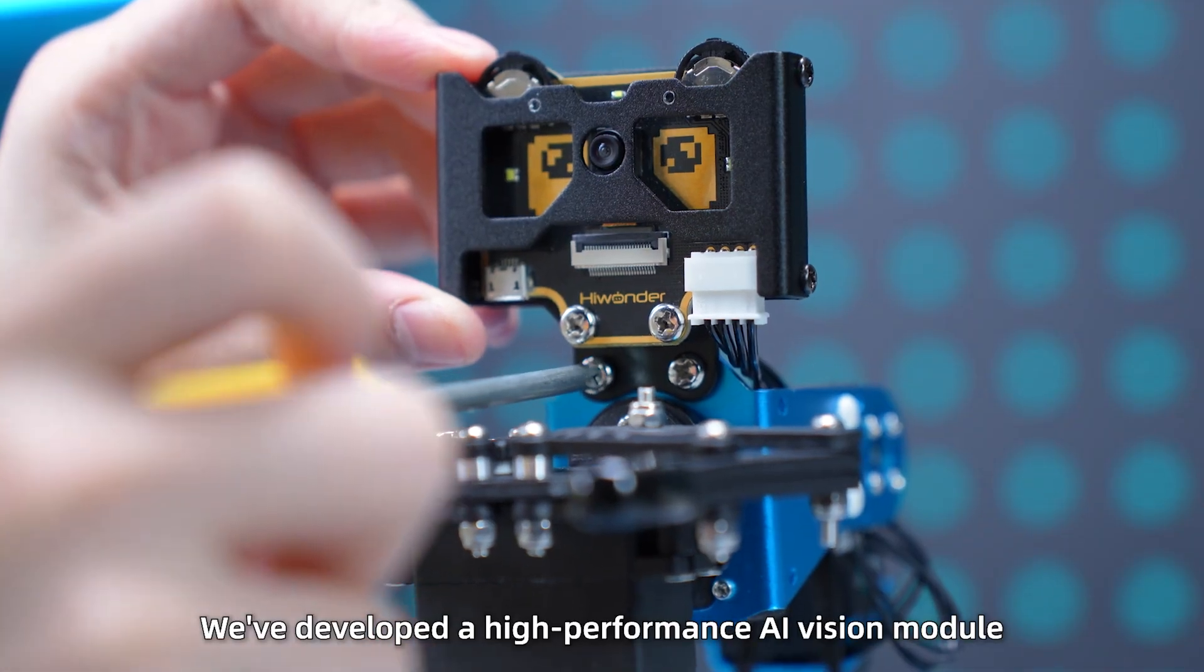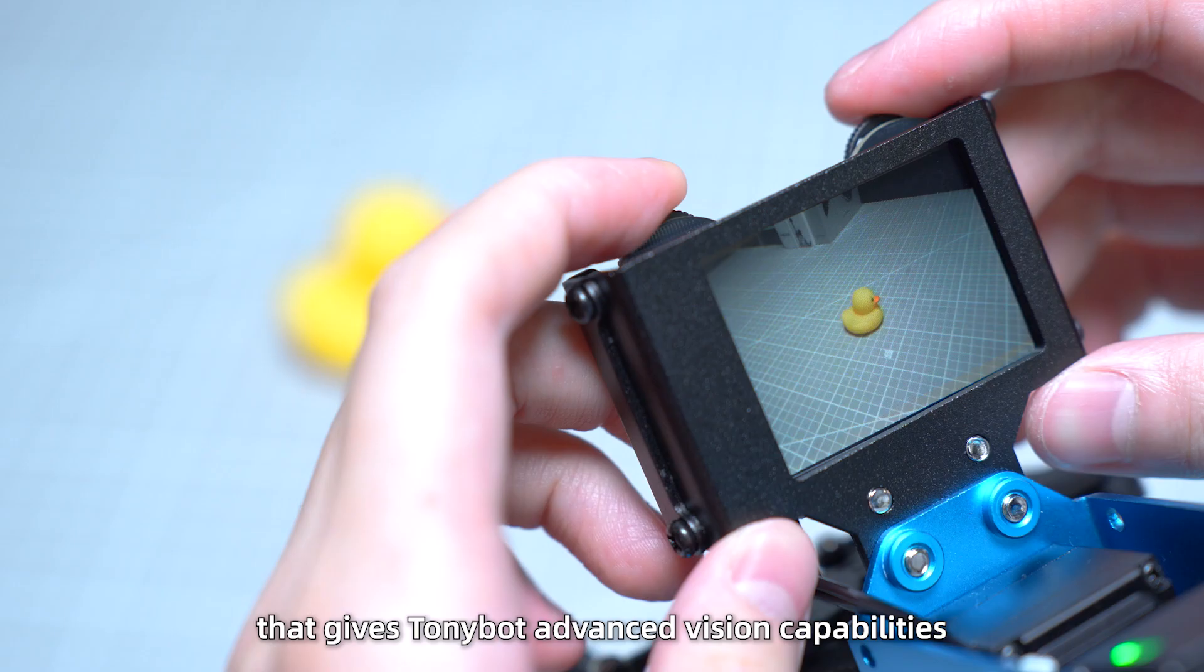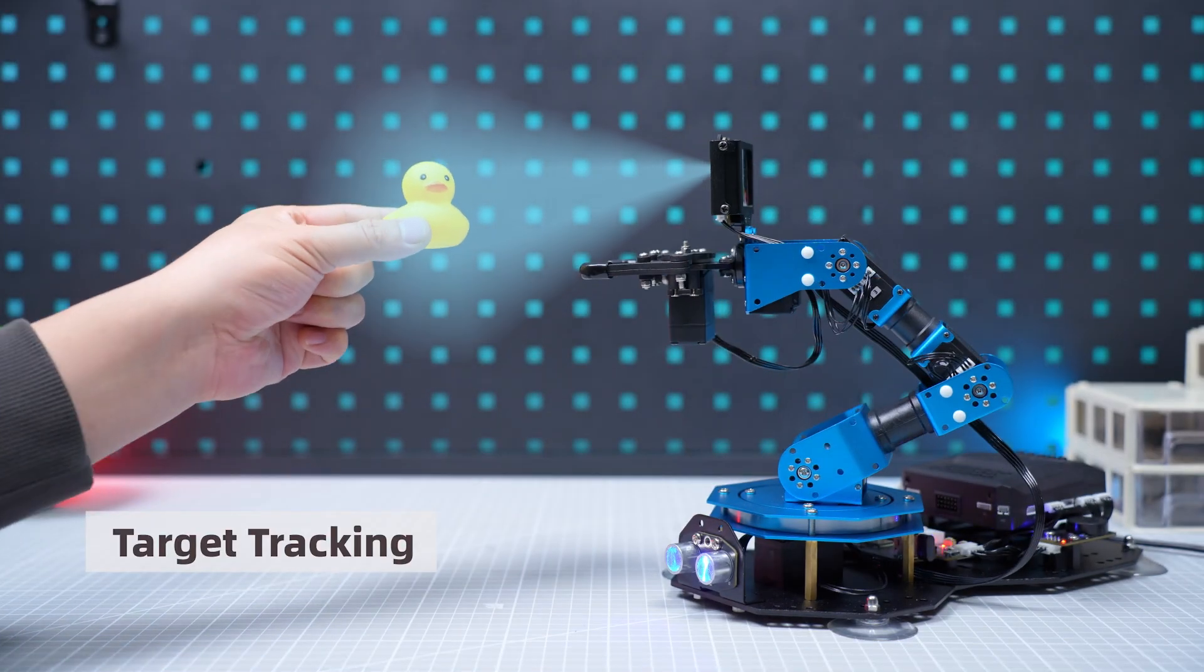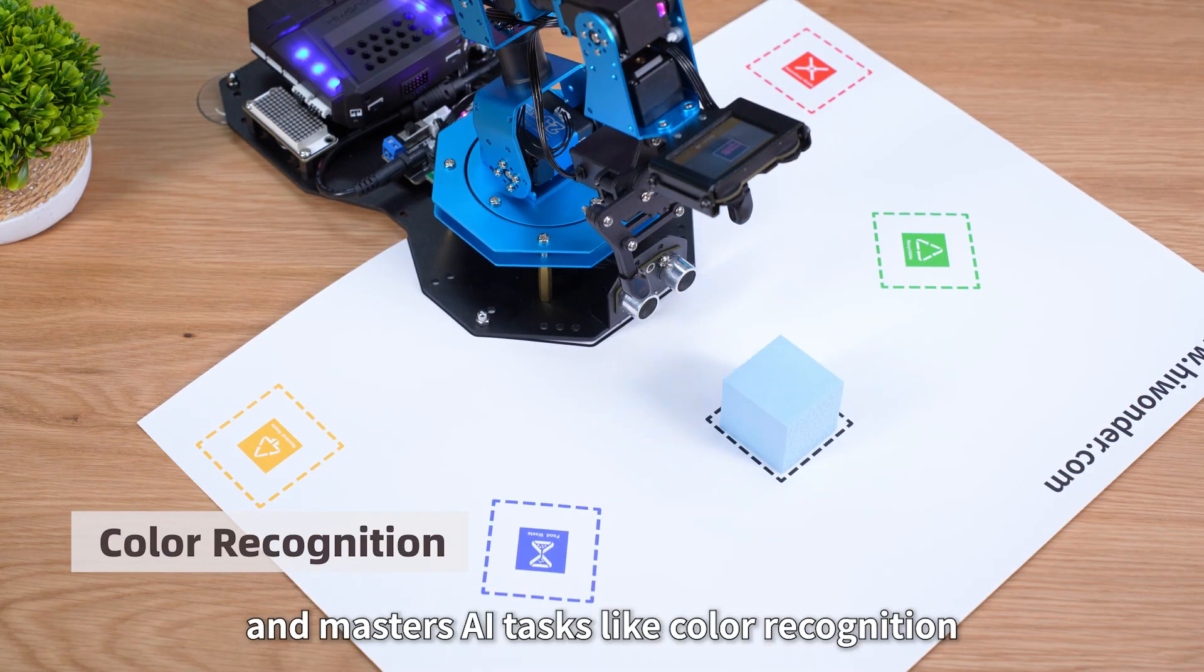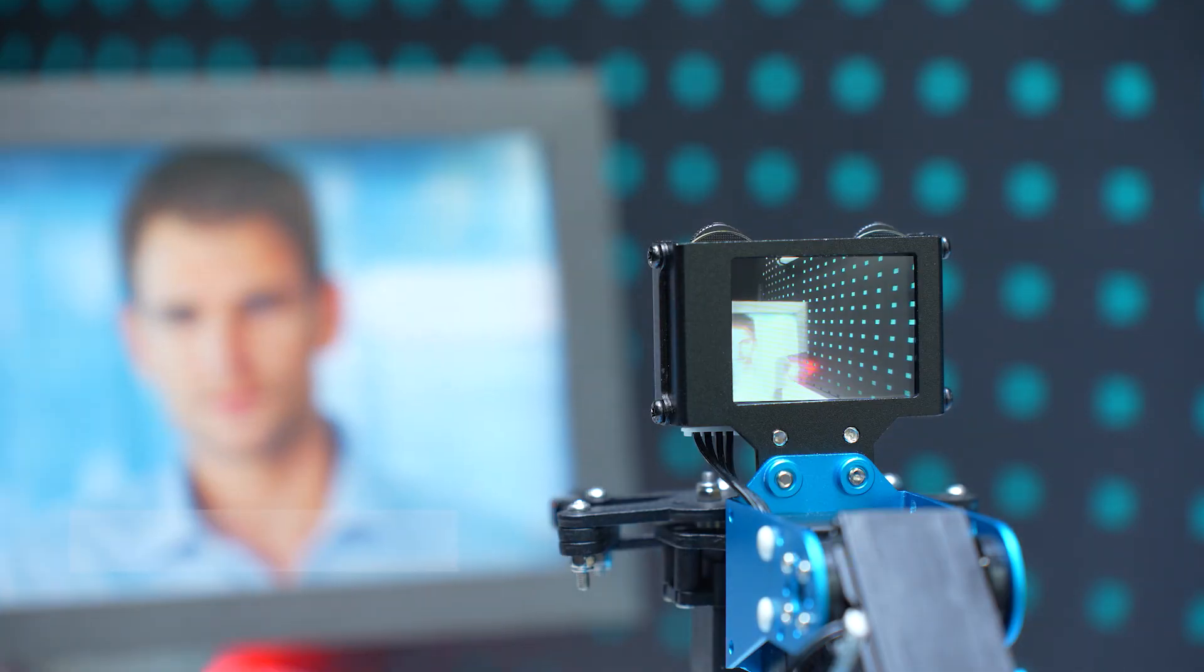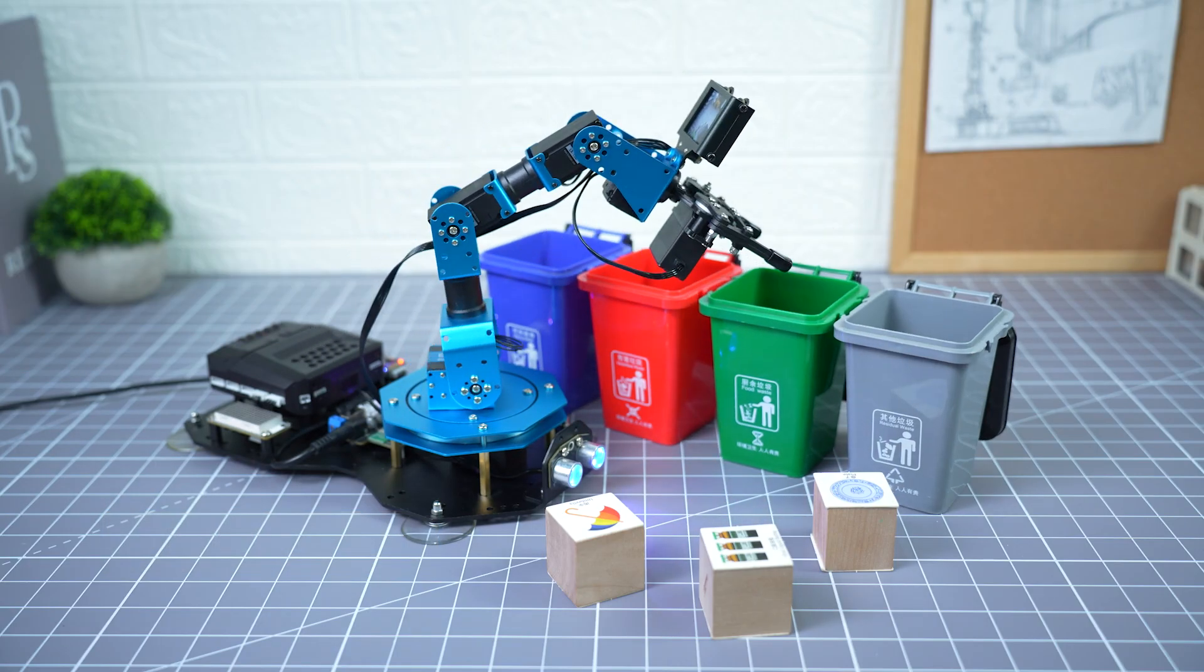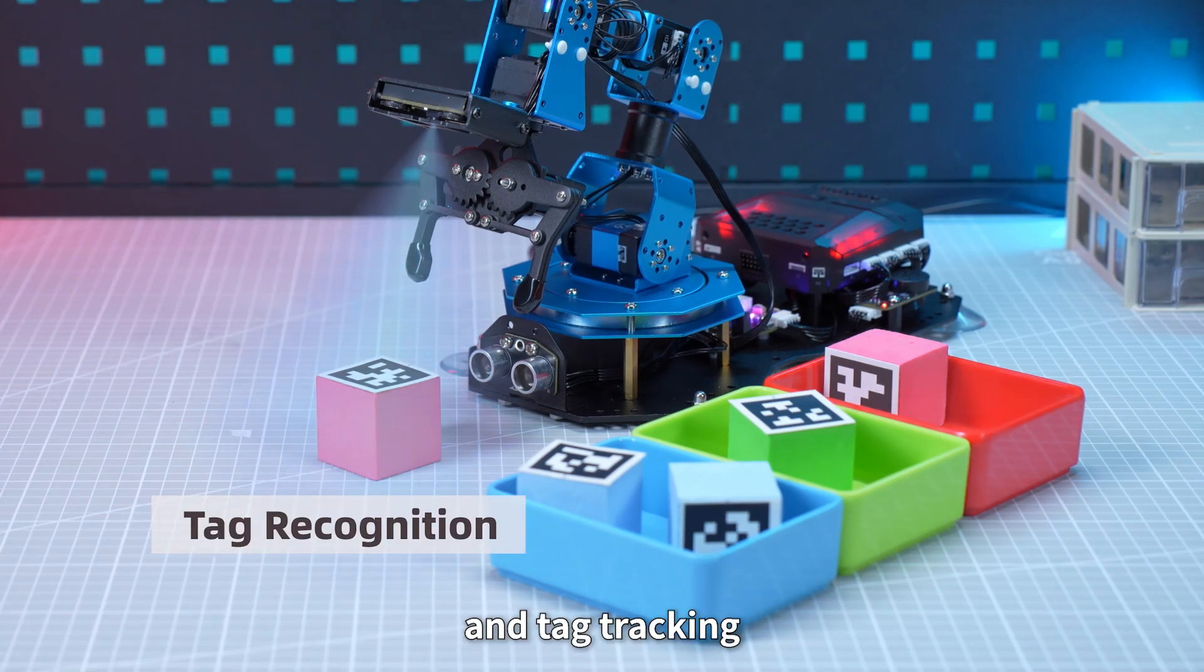We've developed a high-performance AI vision module that gives X-Arm AI advanced vision capabilities. Skip complex training. With one-touch learning, it instantly locks onto objectives and masters AI tasks like color recognition, face recognition, waste sorting, mask detection, and tag tracking.